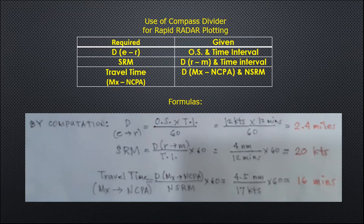Here are the formulas we will be computing for the required items. For your distance E to R, it equals own speed multiplied by the time interval divided by 60. For your SRM, it is equal to your distance from R to M divided by your time interval multiplied by 60.